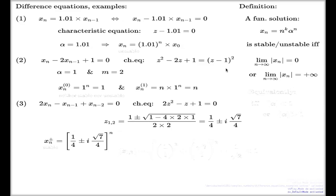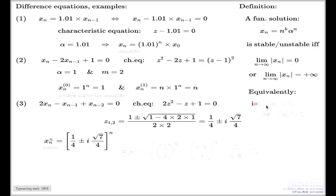In fact, the same terminology is applicable to any other solution as well, not necessarily a fundamental one. But for the fundamental solution, we can easily analyze in terms of alpha and k when the solution is stable and when it is not. For a fundamental solution, if the absolute value of alpha is less than one — because this is exponential growth or decay, and this is a polynomial growth.